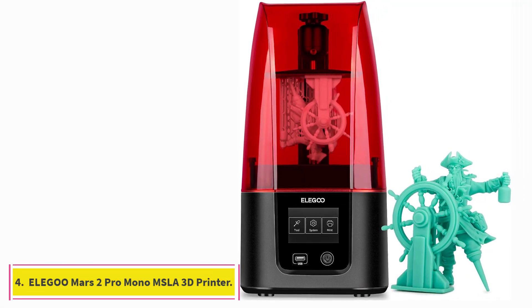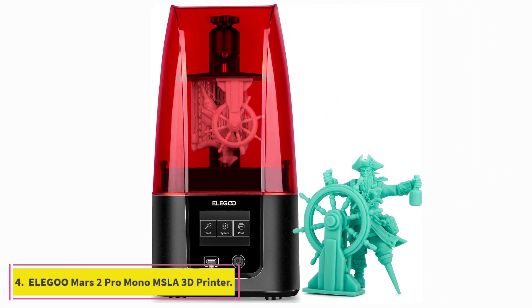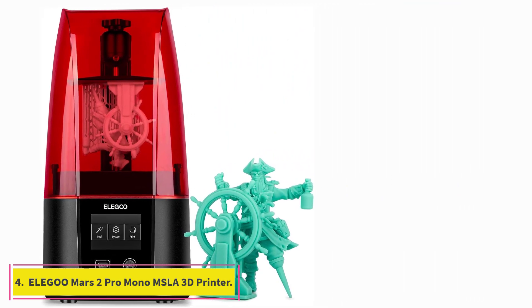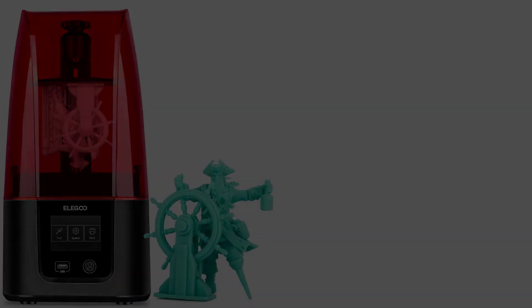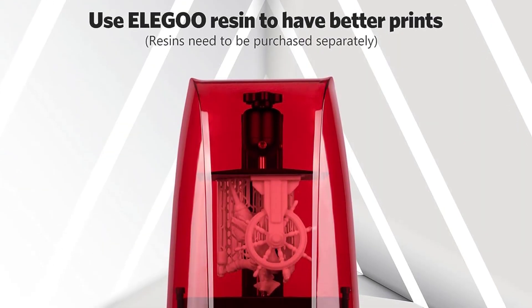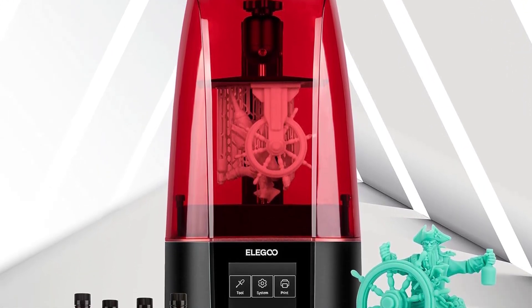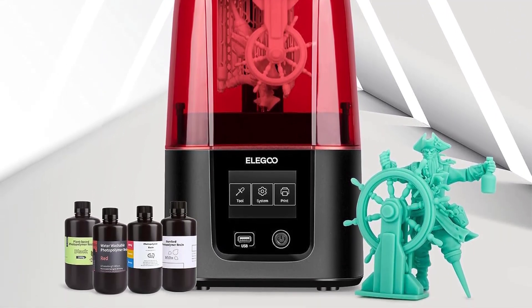At Number 4, ElegoMars 2 Pro Mono MSLA 3D Printer. This 3D printer's compact yet surprisingly spacious build volume is ideal for printing anything from board game miniatures and jewelry to small industrial parts.